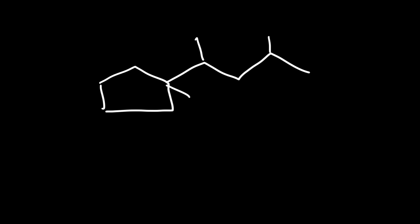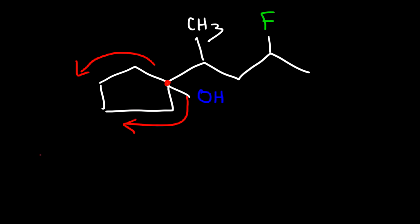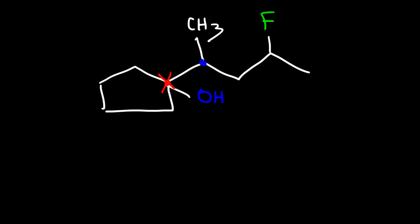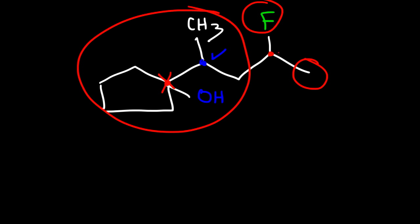Now let's move on to our next example. Let's say we have an OH group, a methyl group, and a fluorine atom. Identify all of the chiral centers in this molecule. Is this a chiral center? Notice that the left side and the right side are the same, so this is not going to be a chiral center. Now what about the carbon with the CH3? That is a chiral center — this is the first group, this is the second, the third, and the invisible hydrogen. That carbon has four different groups. And this too is a chiral center — we have a methyl group, the group on the left, the fluorine atom, and the hydrogen. So there are two chiral centers in that molecule.